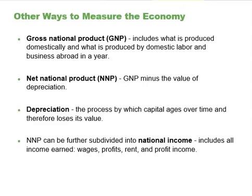GNP adds what domestic businesses and labor abroad produce, and subtracts any payments that foreign labor and businesses located in the United States send home to other countries. In other words, GNP is based more on what a country's citizens and firms produce, wherever they are located, while GDP is based on what happens within a certain country's geographic boundaries. For the United States, the gap between GDP and GNP is relatively small.